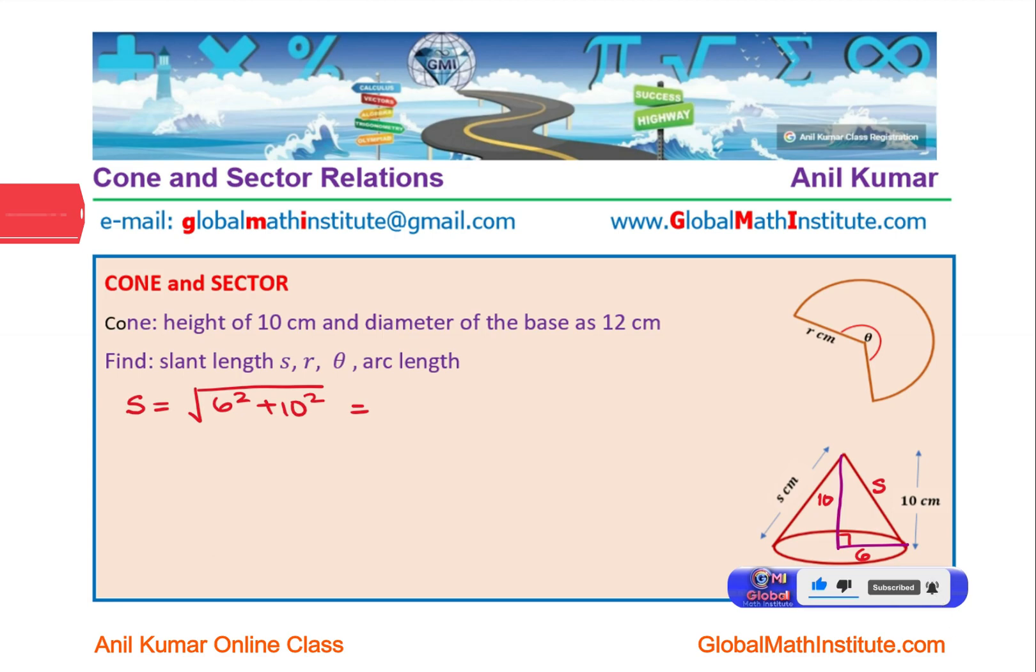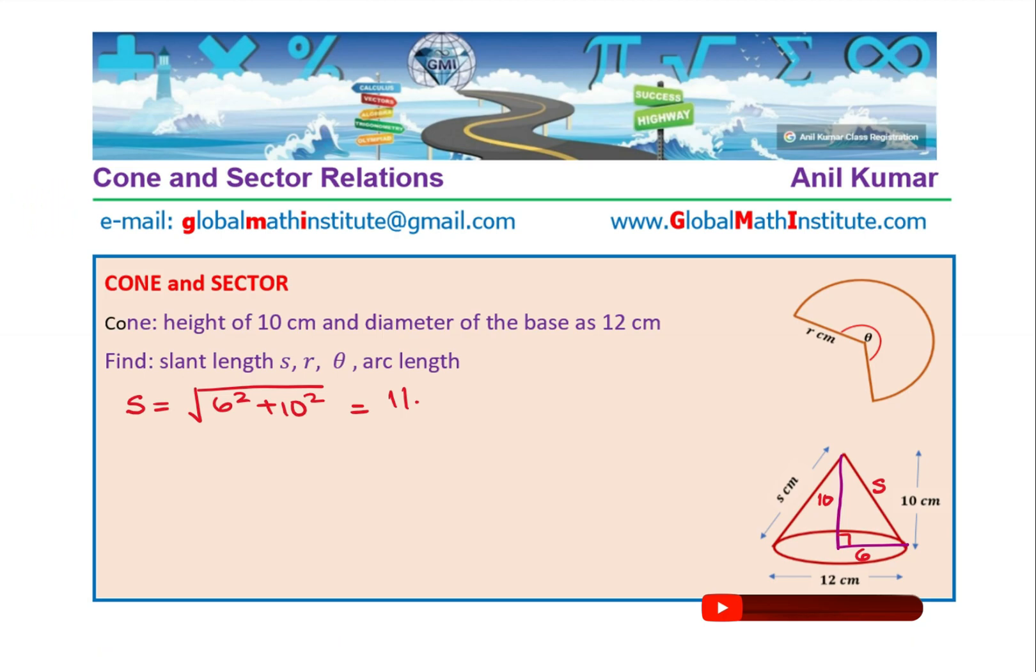So s equals square root of 6 squared plus 10 squared, which is 36 plus 100. The square root is 2 square root 34, which equals 11.6619. We have to write all our answers to 3 significant figures, so we will approximate this to 11.7 cm. We know the slant length.